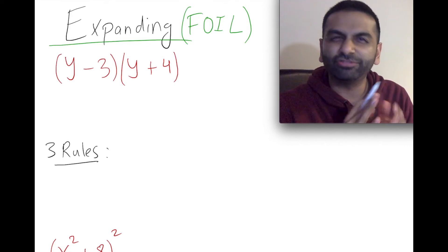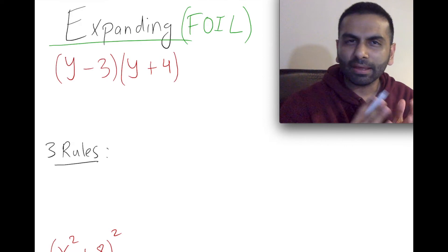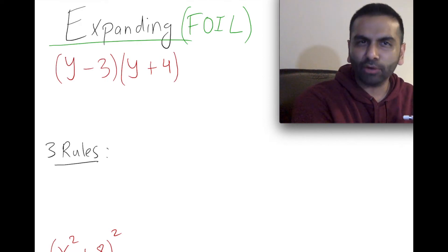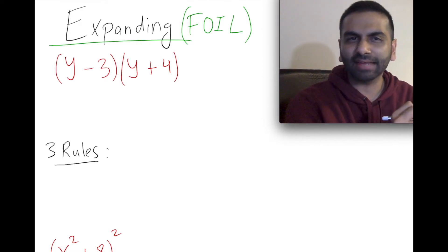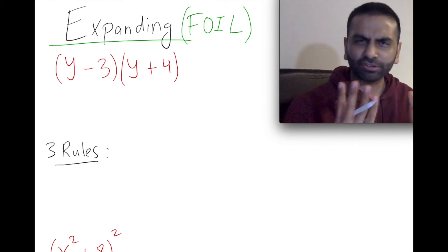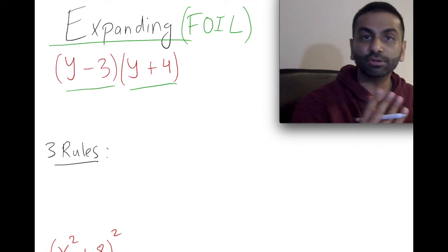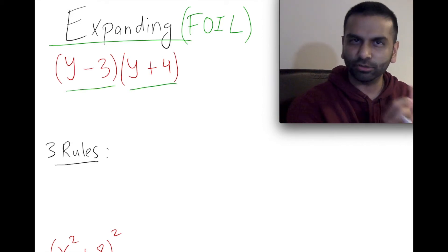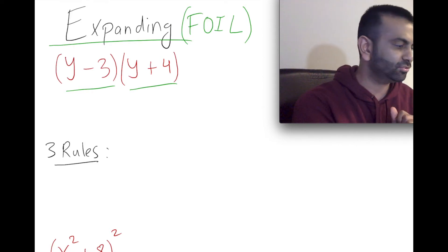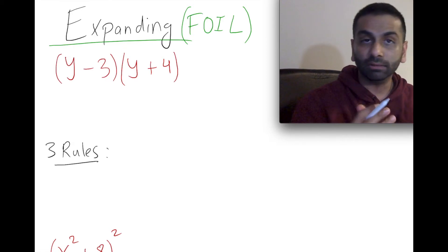In this video we'll be talking about FOILing or expanding. The word FOIL is an acronym — it stands for First, Outer, Inner, Last — but you don't really need to memorize it in order to do expanding. What we're talking about is multiplying two binomials. 'Bi' meaning two, so each has two terms, and you're multiplying these two binomials with each other.